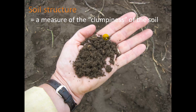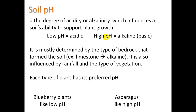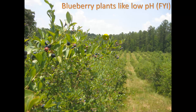We can also characterize soil by its structure — a measure of the clumpiness of the soil. Some soils are a little more compacted, some are more loose and open. This is not as big a concept as soil texture. Soil pH is the degree of acidity or alkalinity, which influences a soil's ability to support plant growth. Low pH is acidic; high pH is alkaline or basic. It's mostly determined by the type of bedrock that forms the soil — for example, limestone produces alkaline soils. It is also influenced by rainfall and the type of vegetation. Each type of plant has its preferred pH: blueberry plants like low pH, whereas asparagus likes high pH.